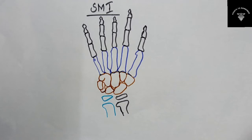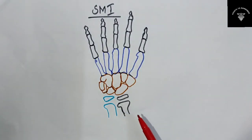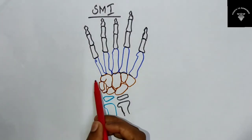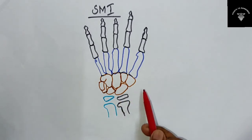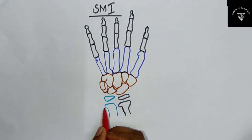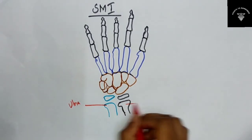Before moving on to the classification, let's see about the anatomy of the hand-wrist. The hand-wrist region is made up of numerous small bones. Have a look at this diagram. In this diagram, the palm is facing towards you. The ulna will be on the medial side, and on the distal side you have the radius.